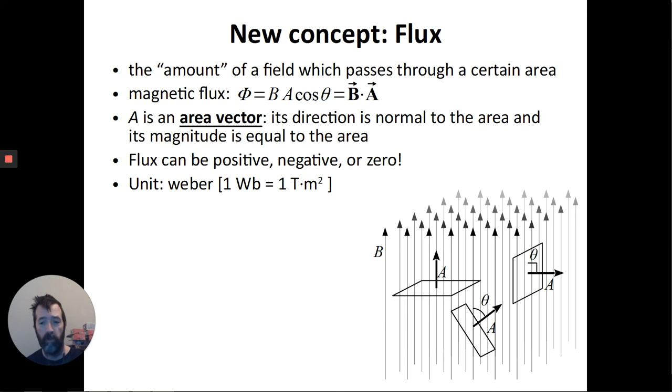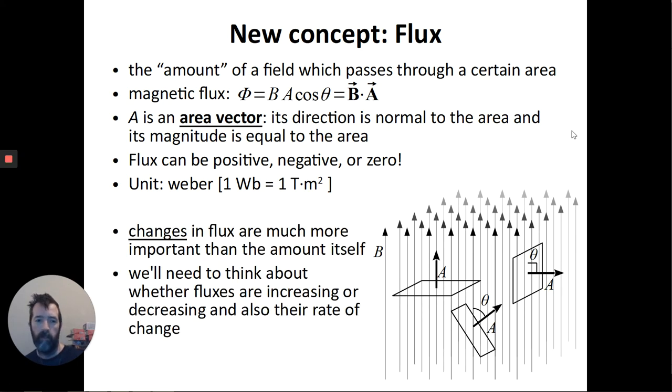Because of the cosine, flux could be positive, negative, or zero. It becomes zero when the angle theta is 90 degrees, as in this third diagram here. And if I were to keep rotating the area so that the area vector pointed down, that would represent a negative flux because the magnetic field is going the opposite direction of the area vector. The name of the unit for flux is the Weber. And it's equal to one Tesla times a meter squared. So that's Tesla is the unit for B, meter squared is the unit for A.